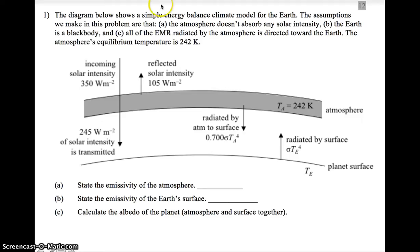Let's take a problem. We've got a diagram showing a simple energy balance climate model for Earth. The assumptions we make are: the atmosphere doesn't absorb any solar intensity—so all of it is either transmitted or reflected, none is absorbed. Second, the Earth is a black body. And thirdly, we're assuming all of the EMR from the atmosphere is directed toward the Earth. So all of this radiation is going down, none going up. That's not a great assumption, but we'll make it for simplicity. The atmosphere's equilibrium temperature is 242 K.